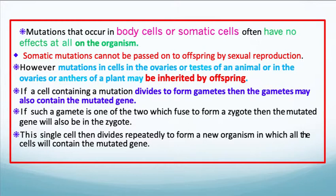Mutations that are in cells in the ovaries or testes of an animal, or in the ovaries or anthers of a plant, may be inherited by offspring. If a cell containing a mutation divides to form gametes, then the gametes may also contain that mutated gene. If such a gamete is one of the two which fuse to form a zygote, then that mutated gene will also be in the zygote, and that single cell will divide repeatedly, forming a new organism in which all the cells contain that mutated gene.